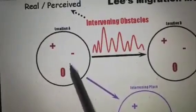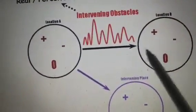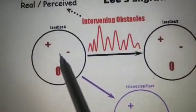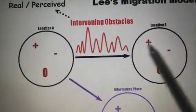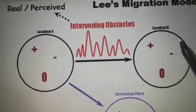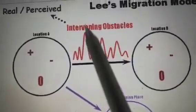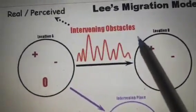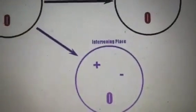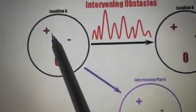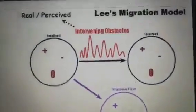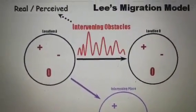Let us explain the theory with a diagram. This is place A — the place of origin — and place B — the place of destination. The third element is called the intervening place. According to Lee, push factors from A and pull factors to B cause people to try to move. But if there are many obstacles between these two places, there will be less movement. More obstacles mean minimum migration; fewer obstacles mean maximum movement. If there are more obstacles, people moving from A might choose a third place — the intervening place. Plus signs indicate population addition, minus signs indicate people leaving A, and zero indicates a null result. This is how Lee explains migration through intervening obstacles.